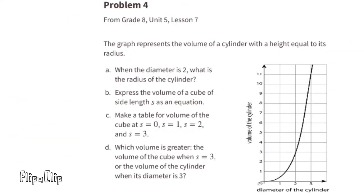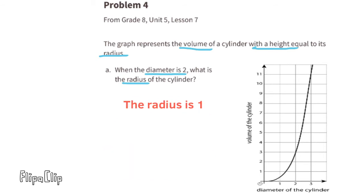Problem number 4 from 8th grade, Unit 5, Lesson 7. The graph represents the volume of a cylinder with a height equal to its radius. Part A: when the diameter is 2, what is the radius of the cylinder? Radius is half the length of the diameter, so if the diameter is 2, the radius is 1.